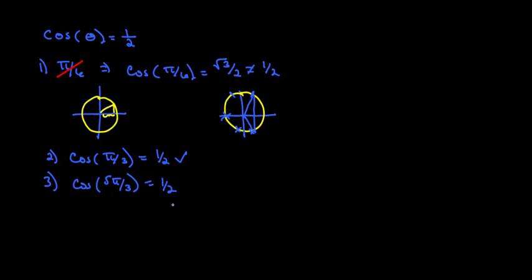So this also is equal to 1 half, so this checks. So our solution set out of those 3 are pi over 3 and 5 pi over 3. The only one not working was pi over 6.